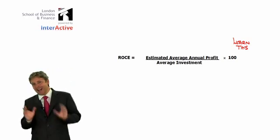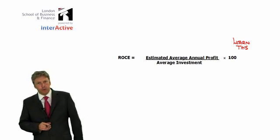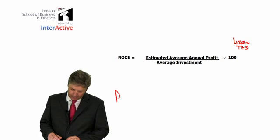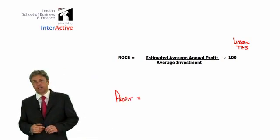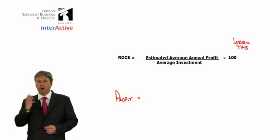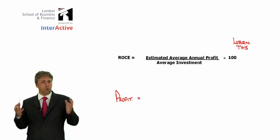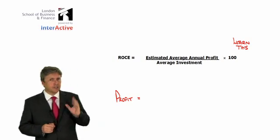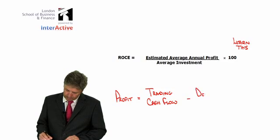We want the estimated average annual profit divided through by the average investment. How do we get profit? In simple terms, which is what we need at F9, profit is simply our trading cash flow — our day-to-day cash flow — minus depreciation. Please remember this relationship.